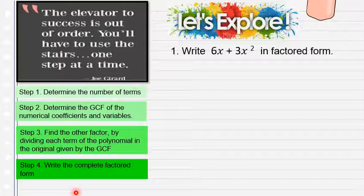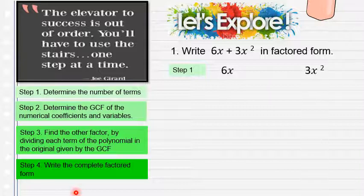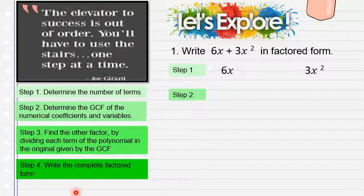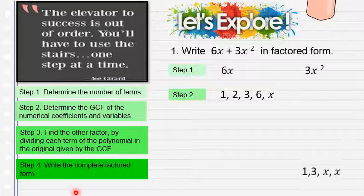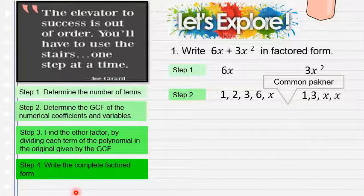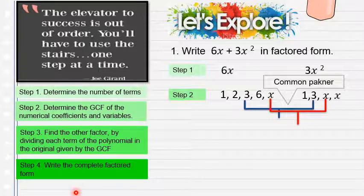Example: Write 6x plus 3x squared in factored form. Step 1: determine the number of terms. Step 2: determine the GCF. The factors of 6x are 1, 2, 3, 6, x. The factors of 3x squared are 1, 3, x, x. The common factors are 3 and x, so the GCF is 3x.